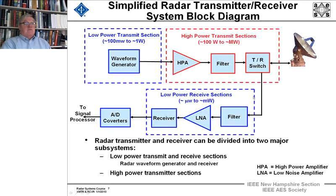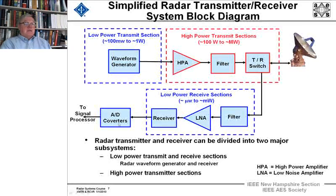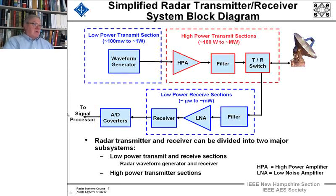The receiving section coming in will have signals from the micro-to-milliwatt size for very long-range radars. Then you go to the A-to-D converters right after the receiver, and then on to the signal processor. We can divide the transmitter and receiver into two major subsystems.